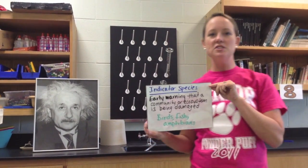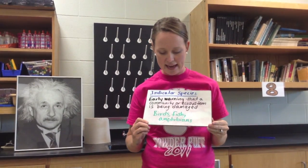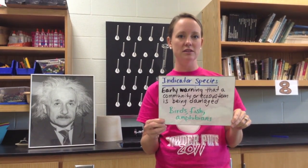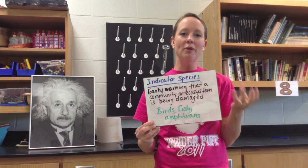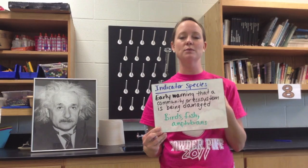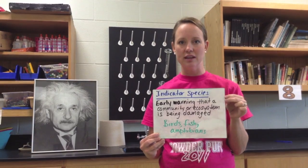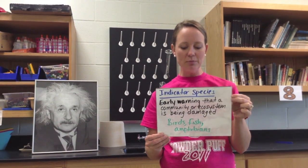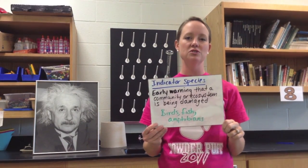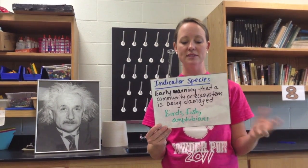An indicator species is a species that serves as an early warning in a community or ecosystem if something is happening. Birds, fish, and amphibians are all good examples of indicators because they respond very quickly to environmental change. One example: coal miners used to take canaries into the mines with them, and when the canary died, the miners knew they had to get out quickly because the birds react to changes in gases or lack of oxygen much faster than a miner would. Fish are good examples too — trout requires clean water and high levels of dissolved oxygen, so if there's an organic pollutant, dissolved oxygen levels drop and you start seeing an absence of trout.